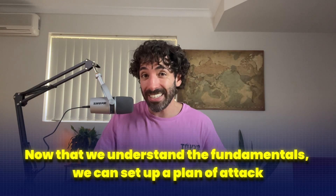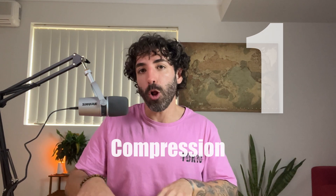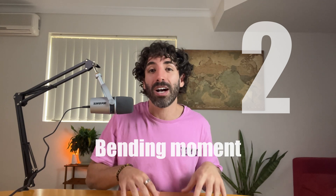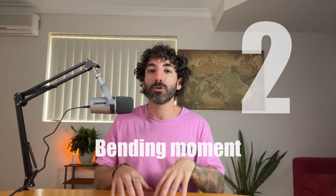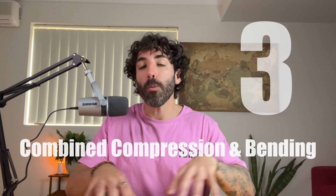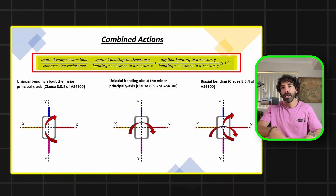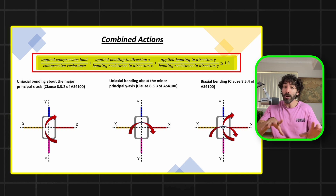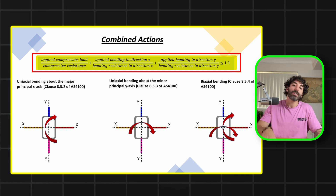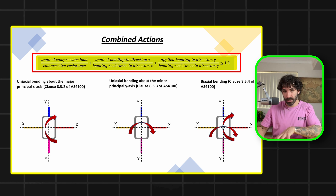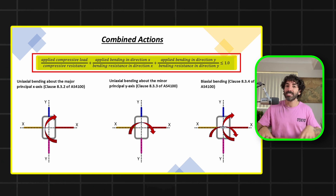Now that we understand all the fundamentals, here's the plan of attack. Step one: design the column for compression loads alone. Step two: design the column for bending, the same way we design a beam. Step three: check the column for combined compression and bending. For combined actions, at the very basic level, we must ensure that the ratio of applied actions to resistance is equal to or less than one.